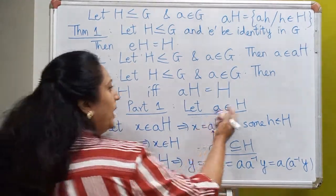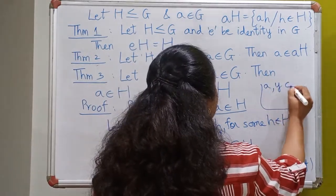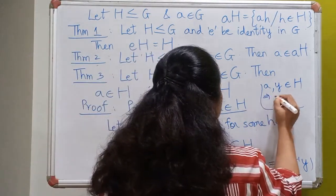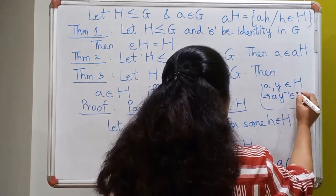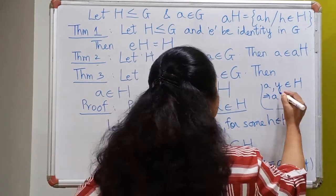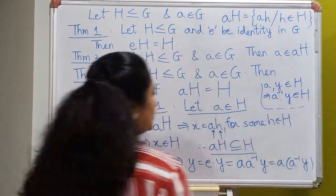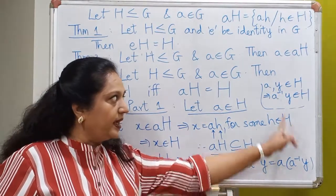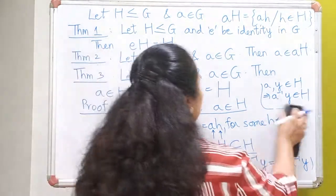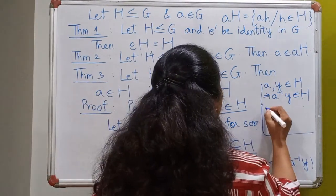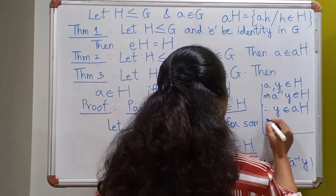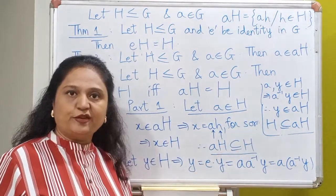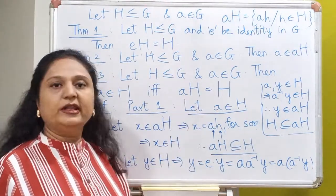Since A is in H by assumption and Y is in H, and H is a subgroup, by a combination of the closure and inverse properties, A⁻¹ times Y will also belong to H. So we have written Y as a product of two elements where the first is A and the second, A⁻¹Y, belongs to H. Therefore Y belongs to the left coset AH, meaning H is a subset of AH. Both sets are subsets of each other, so they are equal.